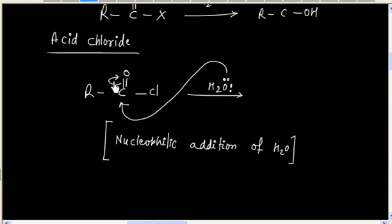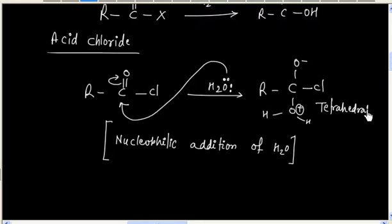And this bond opens. We will have this molecule. Oxygen will have a positive formal charge and this oxygen will have a negative formal charge. This intermediate is called tetrahedral intermediate.